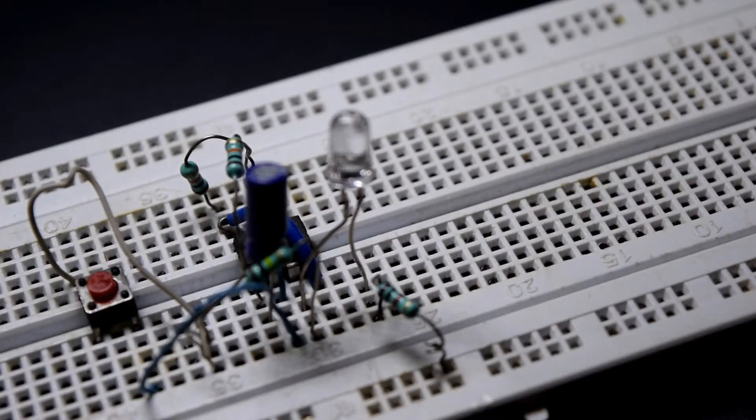Now insert an LED with its positive terminal connected to pin 3 of the IC and negative terminal connected to negative power supply using a 1K resistor.